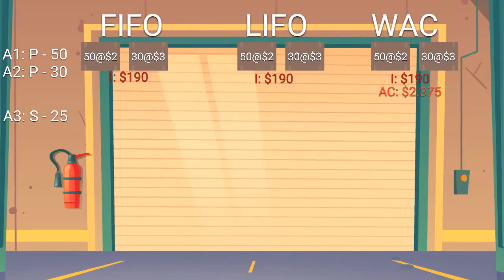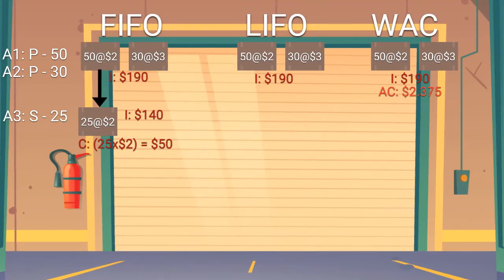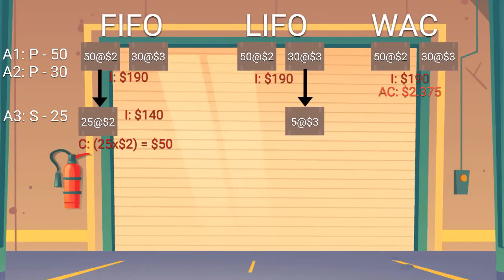Anyone want to take a crack at what that would look like under the FIFO method? You'd just take it out of the box of 50 since it came in first. That's correct. So now our inventory balance is $140 and our cost of goods sold is $50. Under LIFO, the 25 units sold come out of the box that was last purchased — those are $3 each. Therefore, the inventory balance is $115 and the expense is $75.